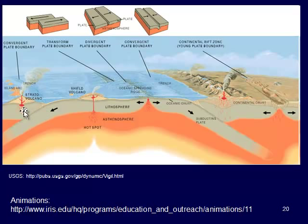We can have ocean-ocean plates colliding: the denser plate sinks below the less dense plate and creates volcanoes, usually in what's called an island arc — so you see them in a line. We can also have two continental plates colliding; in that case, we don't have subduction. Instead, the plates collide and we get huge mountains with a large root that develops underneath, building into the asthenosphere. The Himalayan Mountains are a good example of where that's happening today.